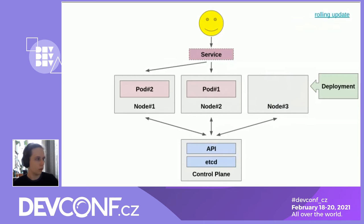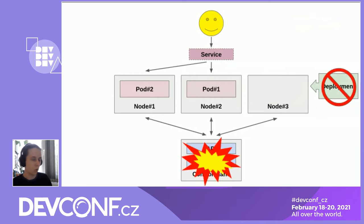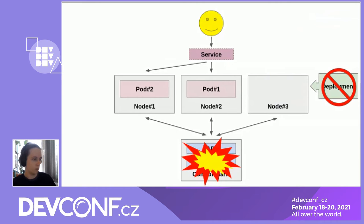While solving the worker single point of failure I introduced a new one: the control plane — we only have one instance. If that crashes we lose our Deployment, but the user is still communicating with our pods. Kubernetes proves quite bulletproof here: if it loses the control plane it enters a read-only mode — you cannot create new pods and the Deployment cannot do its job, but the workload in those pods is still running and the Service is still serving.